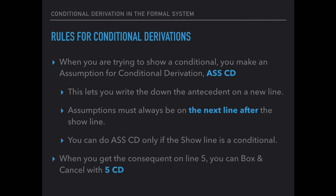The second new move is CD — a new way to box and cancel. If you're trying to show a conditional and you get the consequent, you can box and cancel with CD. So instead of getting the full conclusion on, say, line 9 and writing '9DD,' you get the consequent on line 9 and write '9CD,' and that lets you box and cancel the show line.